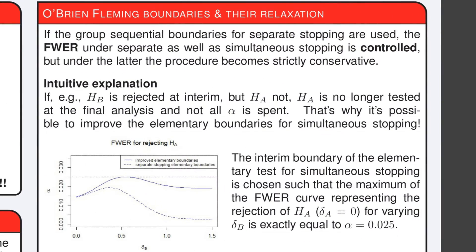As an example, consider O'Brien-Fleming boundaries. If the group sequential boundaries for separate stopping are used, the family-wise error rate is controlled under separate as well as simultaneous stopping. But under simultaneous stopping, the procedure becomes strictly conservative. For simultaneous stopping, if only one hypothesis is rejected at interim, the other hypothesis is no longer tested at final analysis, and not all α is spent.